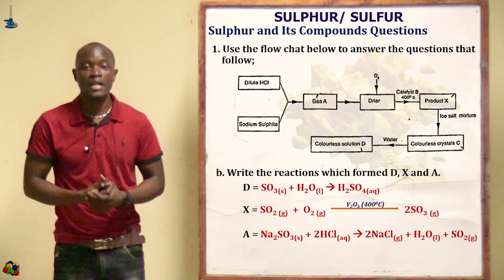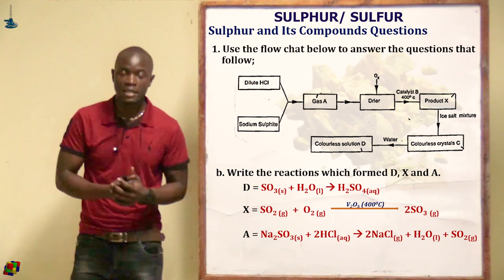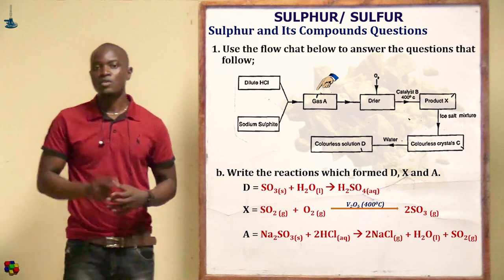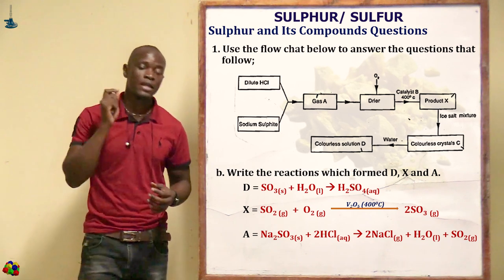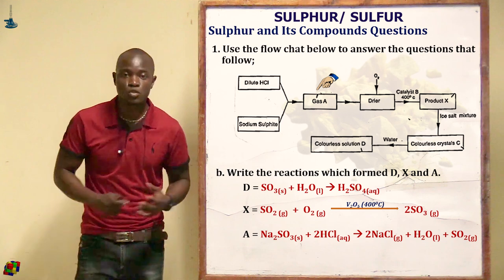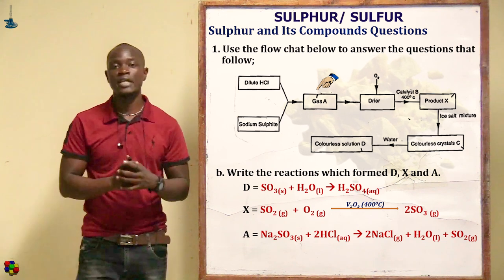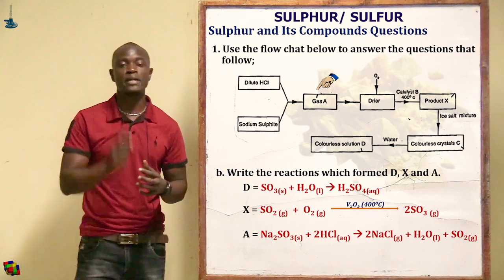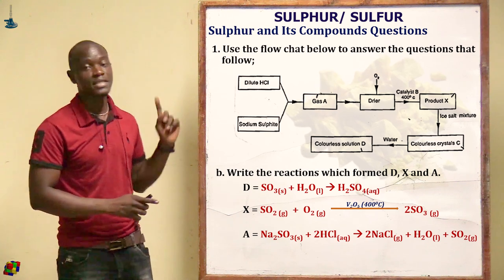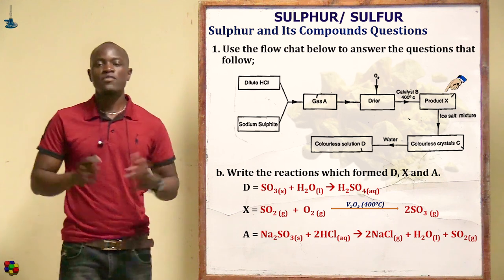For the reaction forming gas A: dilute hydrochloric acid reacts with sodium sulfite to give sodium chloride (solid), water (liquid), and sulfur dioxide (SO₂) in gaseous form. That is the equation for part A.